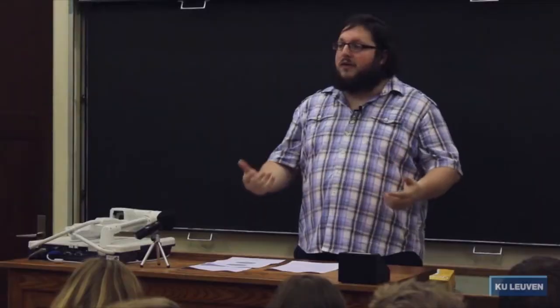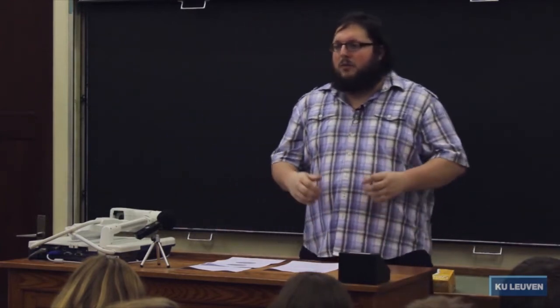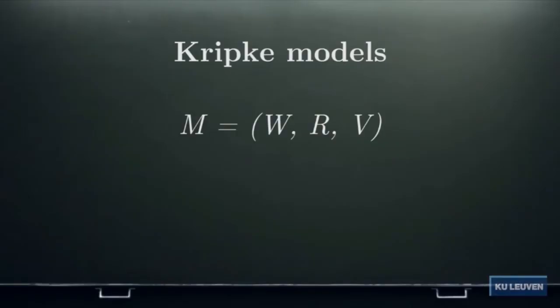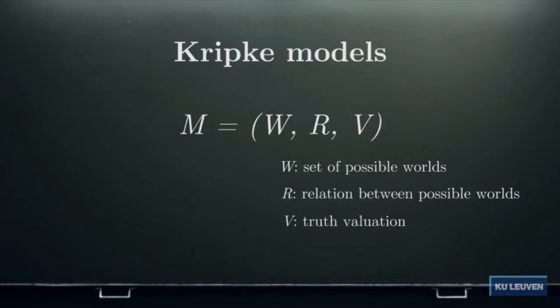What we want to do is not simply formalize these sentences but reason with them. The way you reason with sentences in modal logic is by means of Kripke models. A Kripke model is essentially an extension or generalization of the truth table from propositional logic. It consists of three components: first, a set W of possible worlds; second, an accessibility relation R defined on that set — a relation between possible worlds where W2 is accessible from W1; and third, a valuation V specifying which proposition letters are true at which possible worlds.